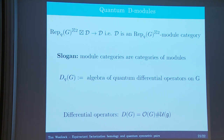This just generalizes to the quantum setting by replacing UG by U_q(G) and OG by the dual quantum group. That's what I mean by the algebra of quantum differential operators. Now this isn't just an algebra in vector spaces — it appears naturally inside a certain category. The group G has a natural right action on itself and a natural left action, so this algebra of quantum differential operators is equivariantly quantizing differential operators with these two actions.